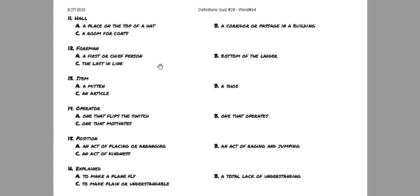Twelve, foreman. Is foreman a first or chief person? B, bottom of the ladder. C, the last in line.